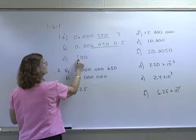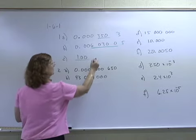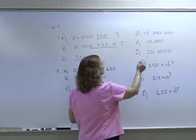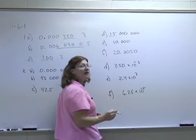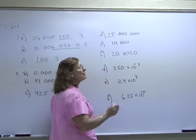In C, all of these digits are significant, so there are three. In D, only the one and the five are significant, so that would be two.